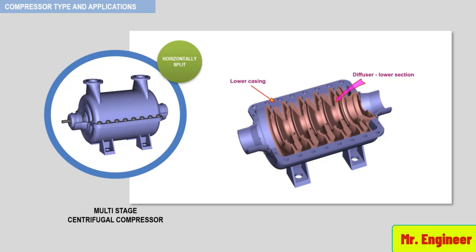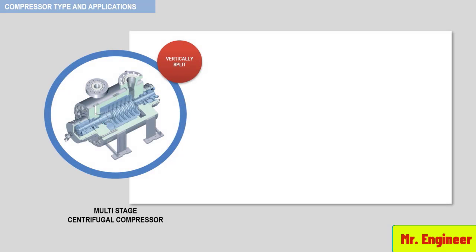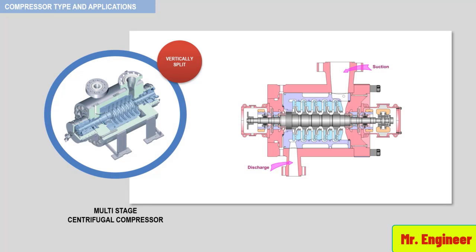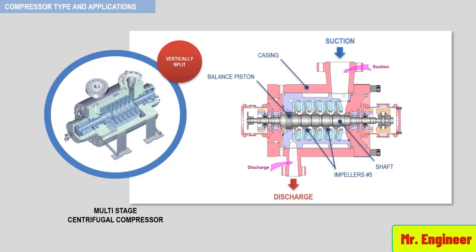Let's now apply the same methodology for a vertically split multi-stage centrifugal compressor. A typical example with its corresponding cut section is seen here. Here you have the suction, the discharge, the casing in the form of a barrel, the rotating shaft, the impellers, the balance piston, the journal bearings, the thrust bearing, and the mechanical seals. Each of these elements will be covered in detail in a later section.